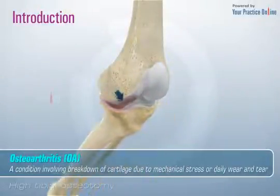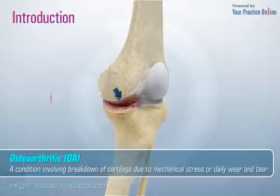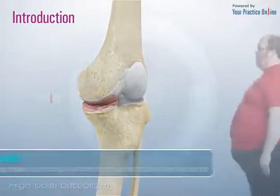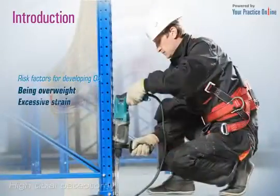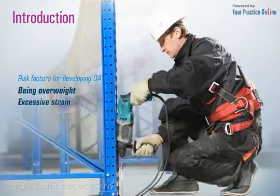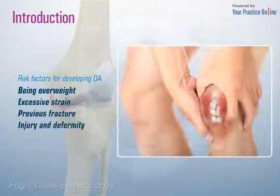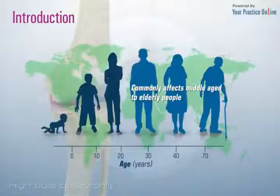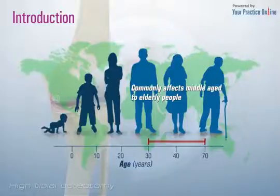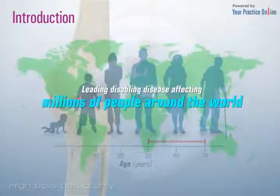Osteoarthritis (OA) is a condition involving breakdown of cartilage due to mechanical stress or daily wear and tear. Risk factors for developing osteoarthritis include being overweight, excessive strain over prolonged periods of time, previous fracture or any joint diseases, injury, and deformity. OA is a slowly progressive degenerative joint disease that commonly affects middle-aged to elderly people and is rated as a leading disabling disease affecting millions of people around the world.